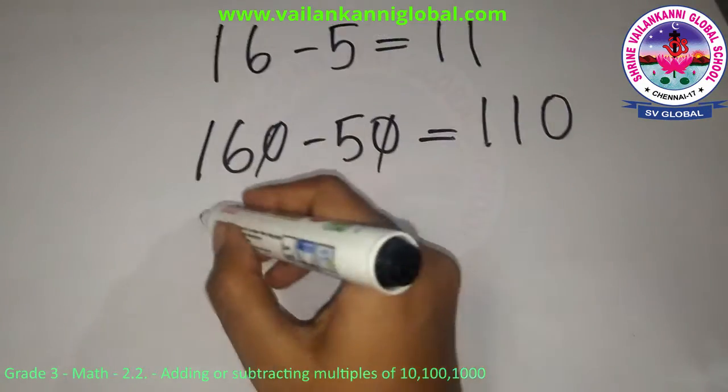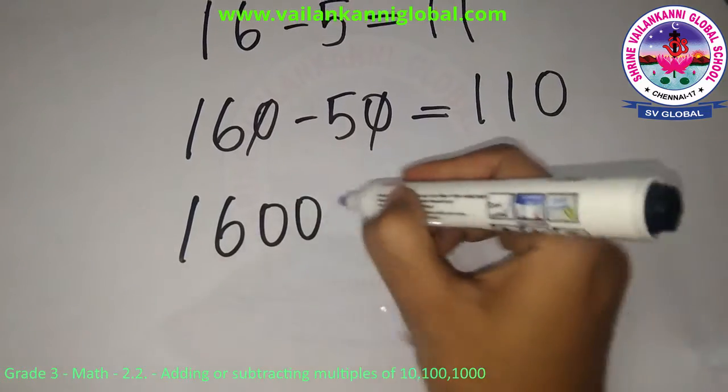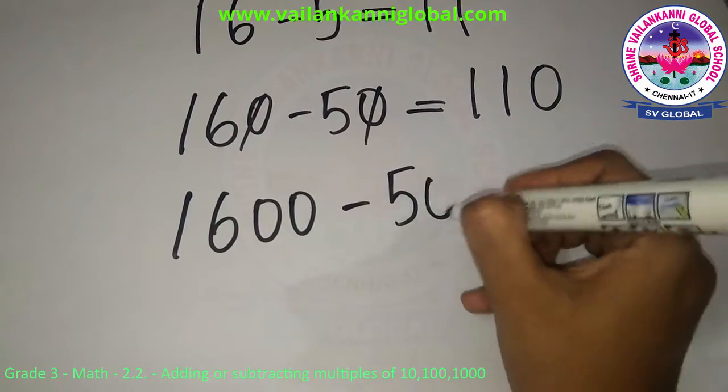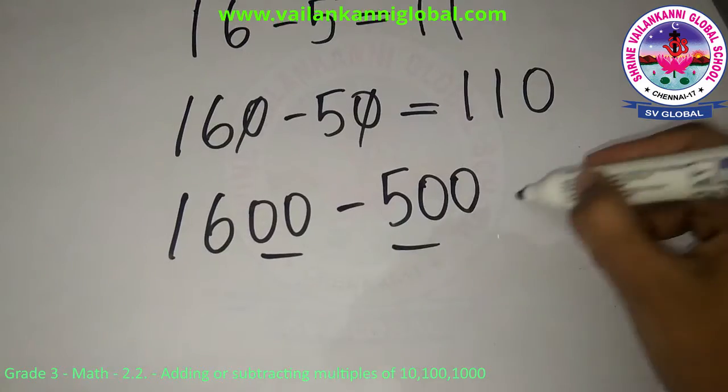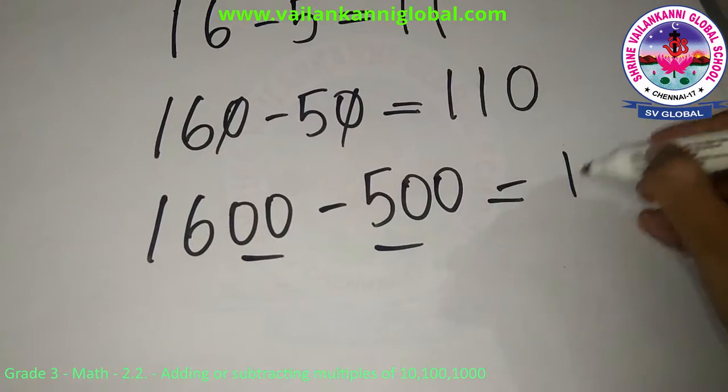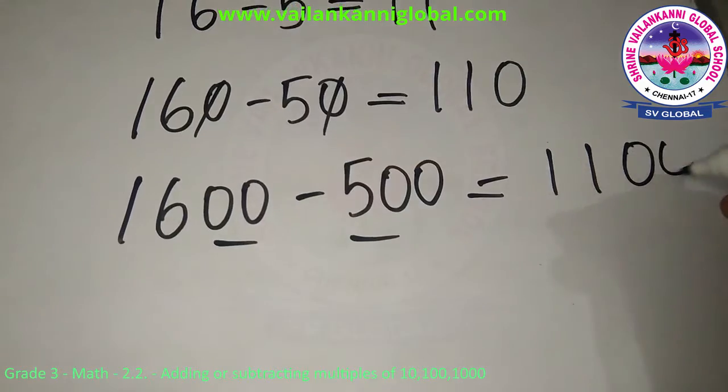Again, 1600 minus 500. Now I have added two zeros. So 16 minus 5 is 11 and add two zeros.